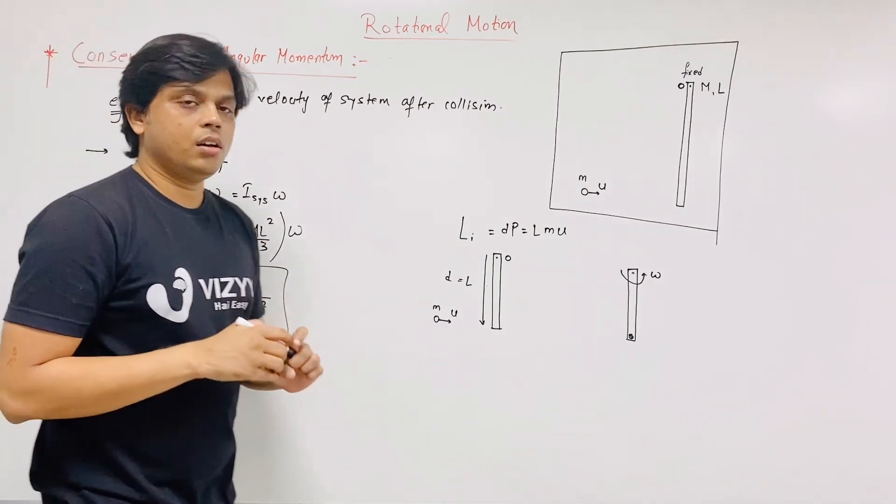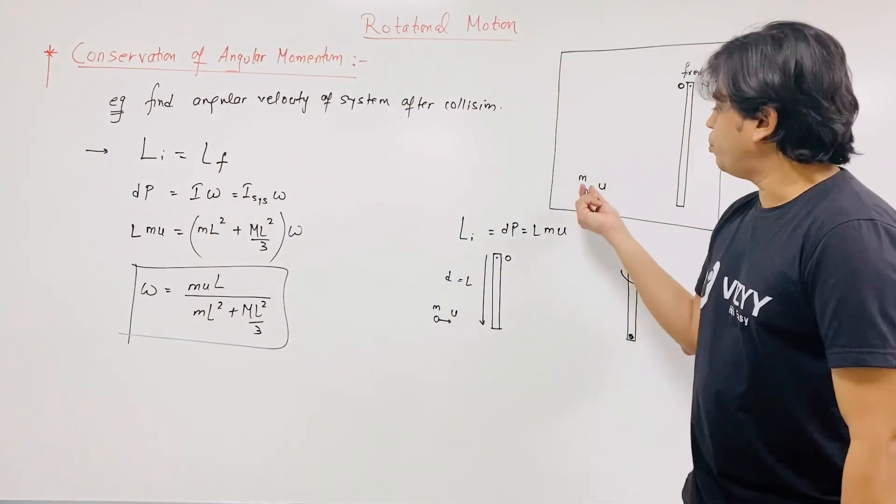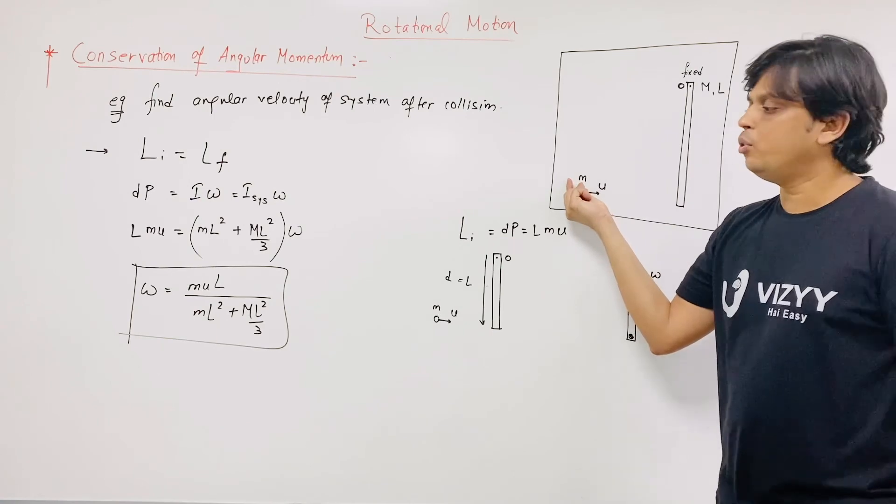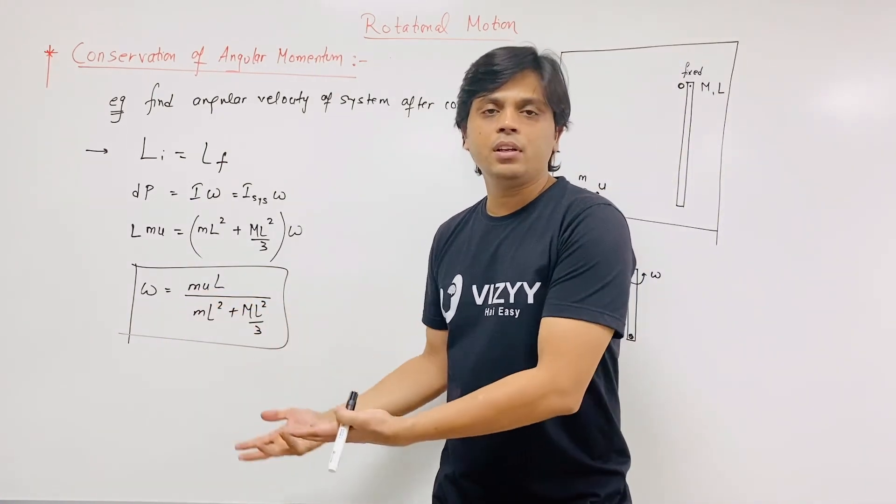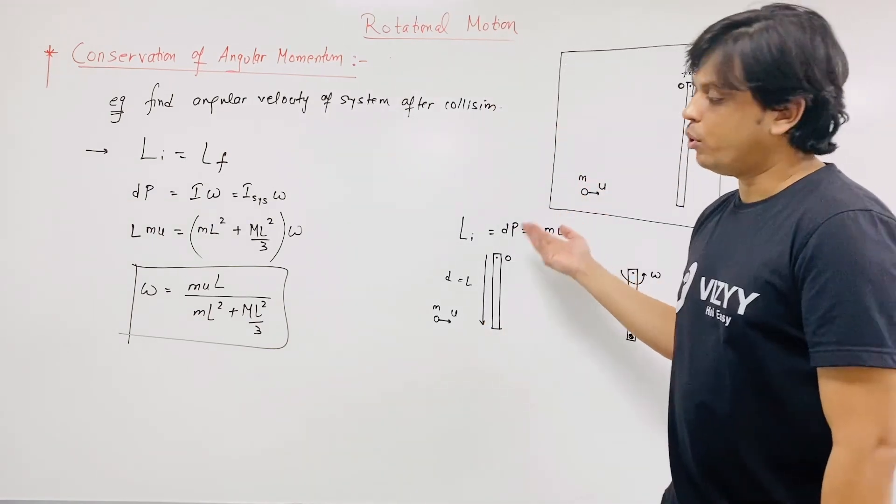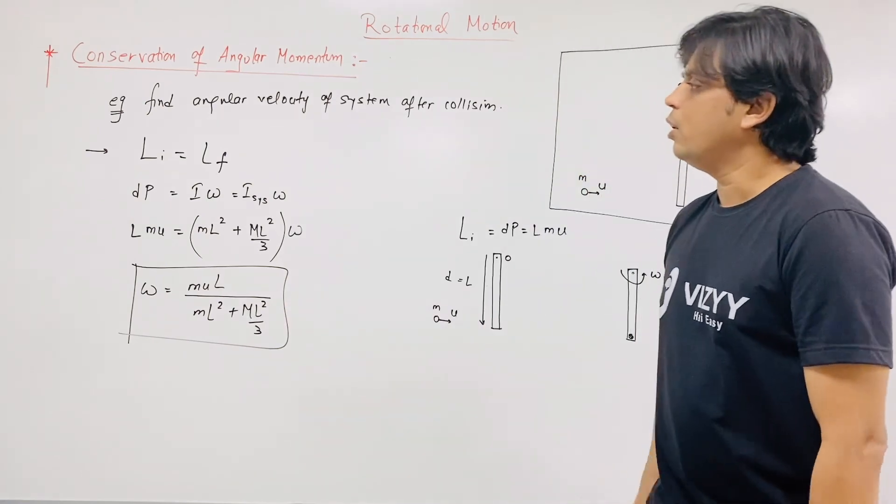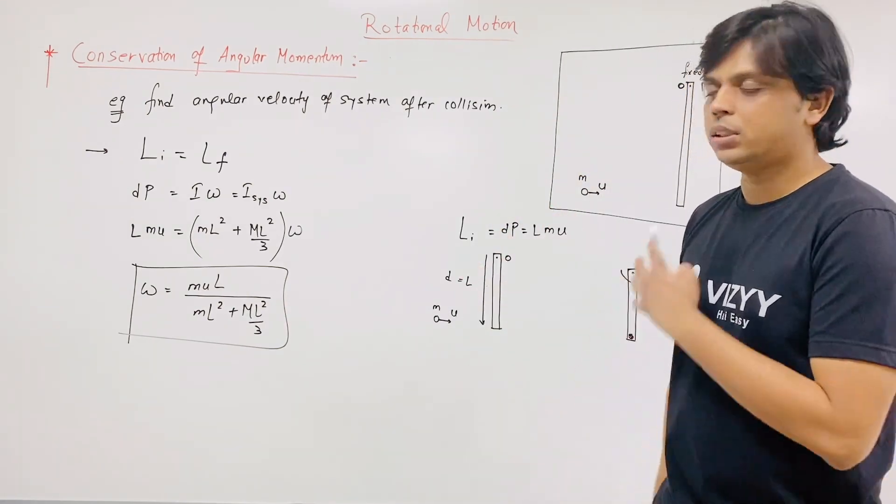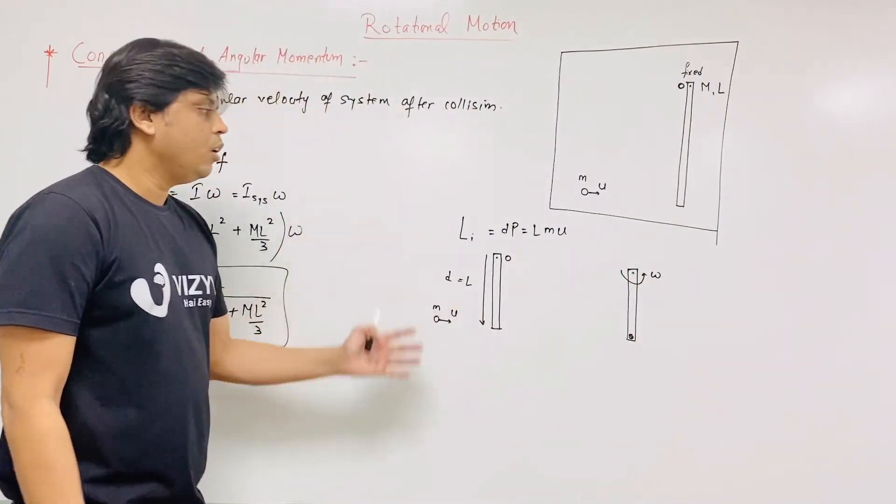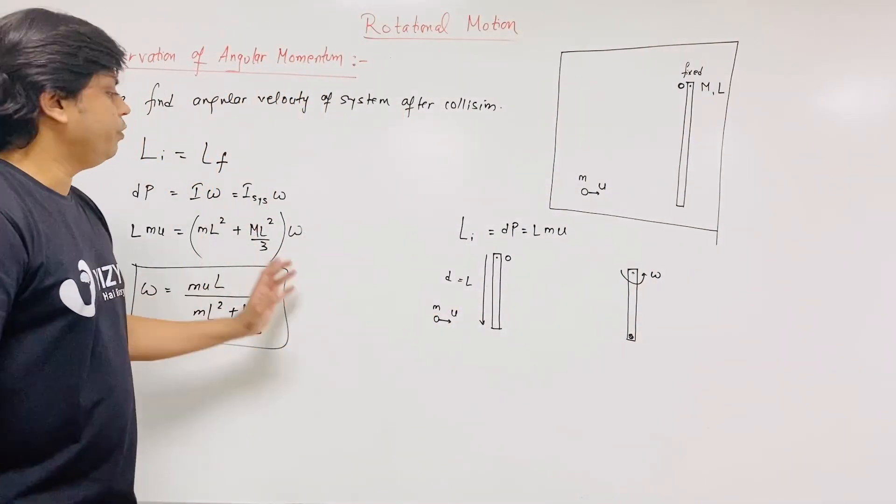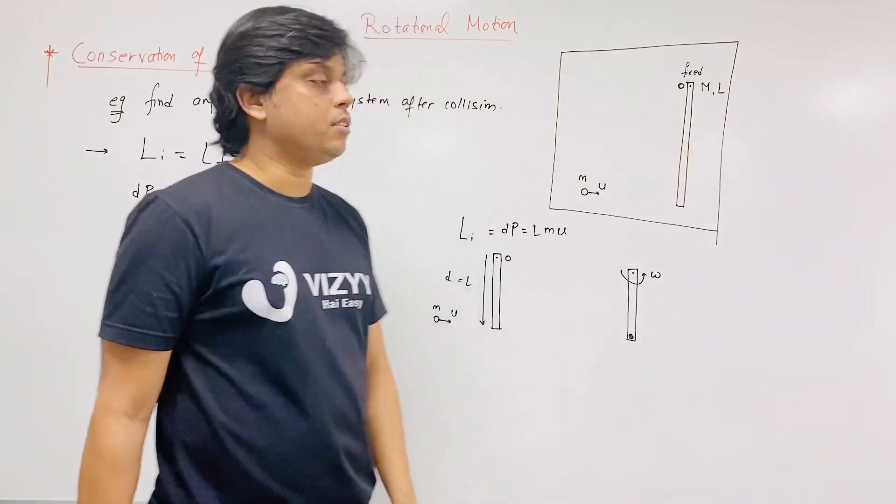This is important for competitive examination. And you can modify this. Suppose mass of this ball is M by 2, capital M by 2, so instead of small m you need to substitute capital M by 2. Or they can give you M by 3, M by 4, any value. Then you have to substitute this value here at this point. So hopefully this example is clear. It's a very important example for competitive exam also. Note it down. We need to find out here final angular velocity of this system.